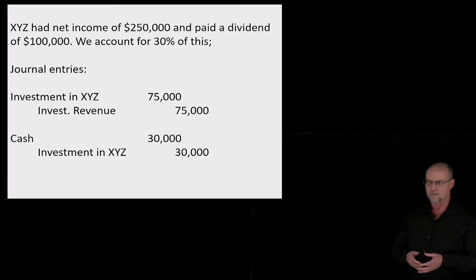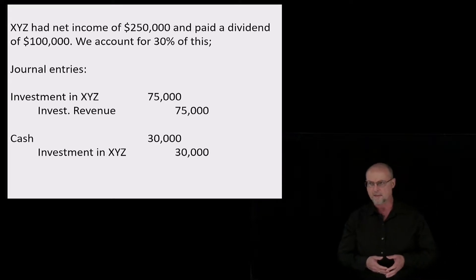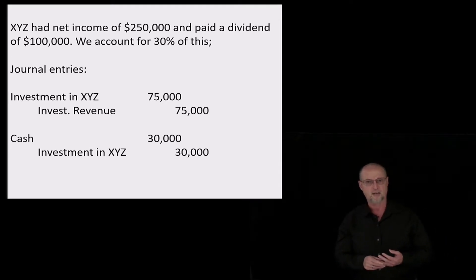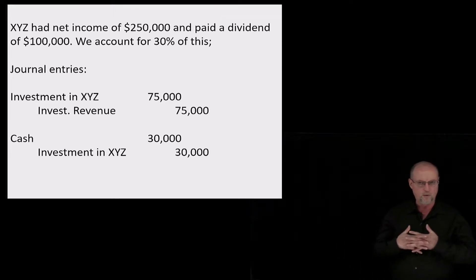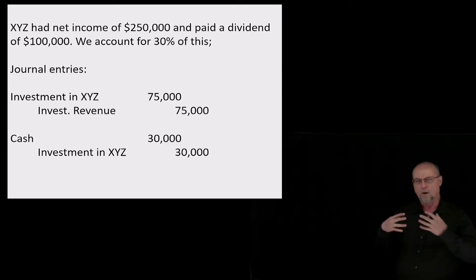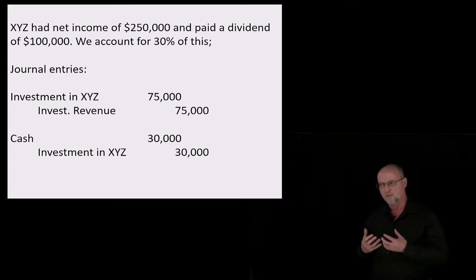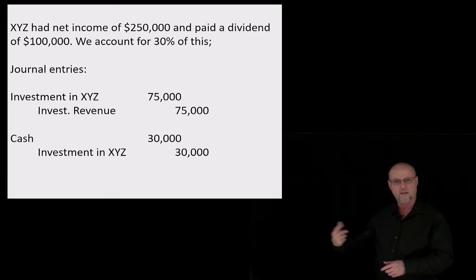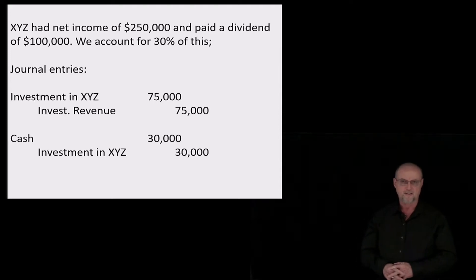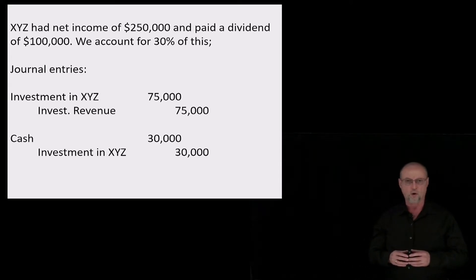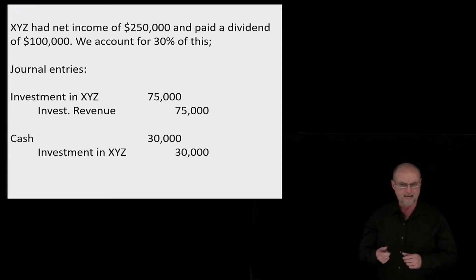XYZ had net income of $250,000 and paid a $100,000 dividend. We're going to increase our investment by 30% of the $250,000 net income — that's $75,000. We debit the investment $75,000 and credit investment revenue $75,000. We also got a dividend of $30,000 — 30% of $100,000. We debit cash for the $30,000 received, but we reduce the value of our investment by $30,000. Under the equity method, their net income increases our investment, and when they pay a dividend, it decreases our investment.